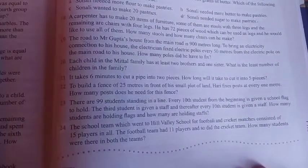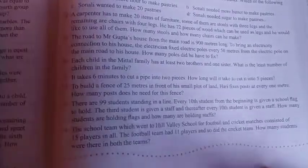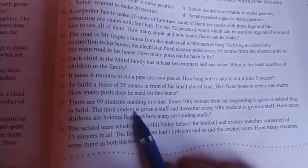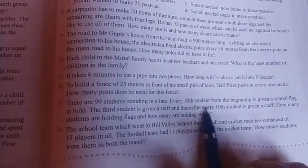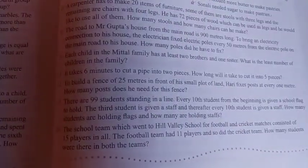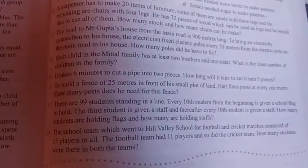Now students, the next question is: There are 99 students standing in a line. Ek line hai, vaha pe 99 students khadey hai, ek row hai for example. Every 10th student from the beginning is given a school flag, and the third student is given a staff and thereafter every 10th is given a staff. So humein dekho, question hamein pehle question samajhna hai. Ek row hai usmein 99 students hai. Okay. Pehli cheez yeh bataya ki har 10th bachche ke paas ek school flag hai. Toh pehle hum flags nikaalte hai, see.